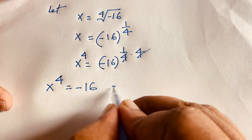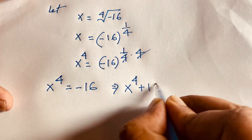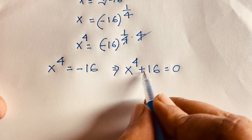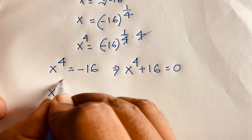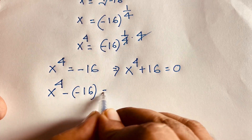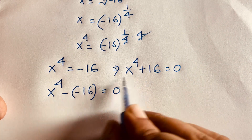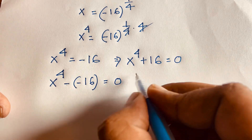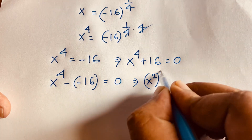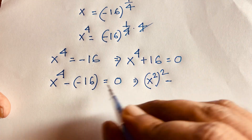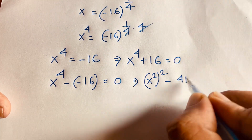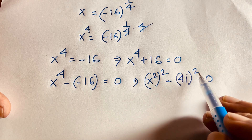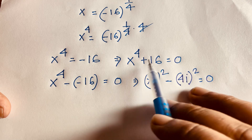Moving -16 to the left side: x⁴ + 16 = 0. I rewrite this as x⁴ - (-16) = 0, then express -16 as (4i)² since 4² = 16 and i² = -1. So the equation becomes (x²)² - (4i)² = 0.